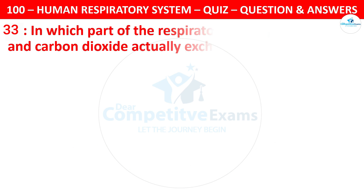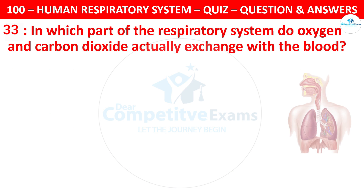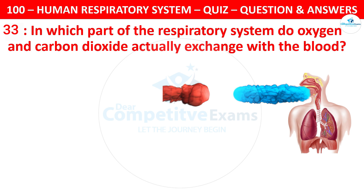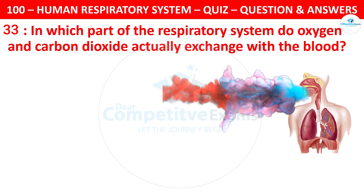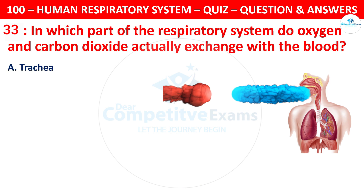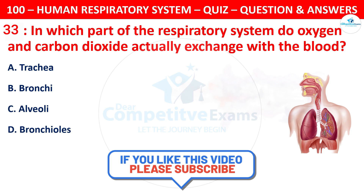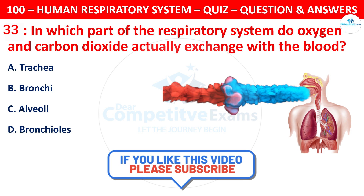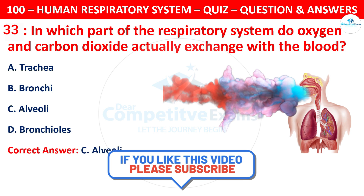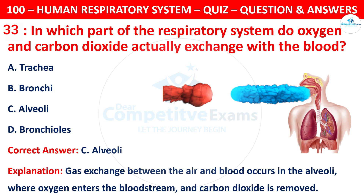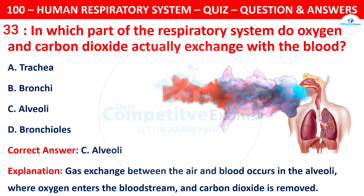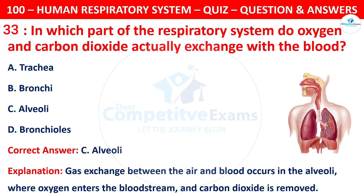Question 33: In which part of the respiratory system do oxygen and carbon dioxide actually exchange with the blood? Your options are: trachea, bronchi, alveoli, or bronchioles. The correct answer is C — alveoli. Gas exchange between air and blood occurs in the alveoli, where oxygen enters the bloodstream and carbon dioxide is removed.